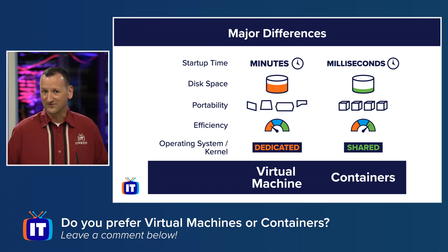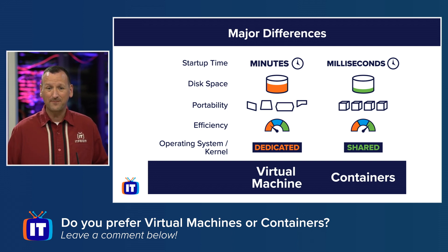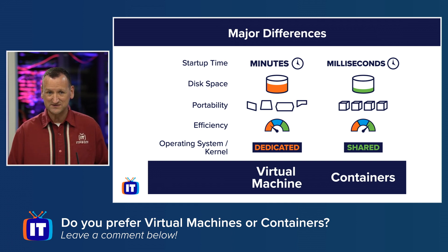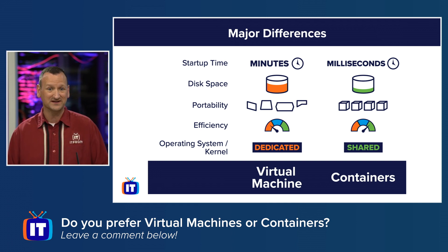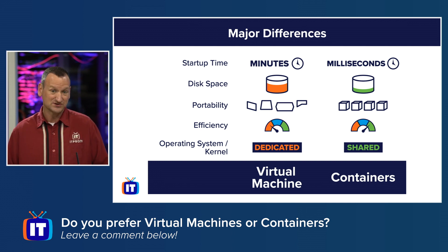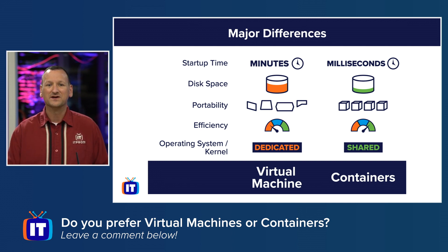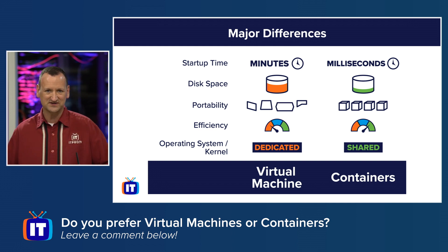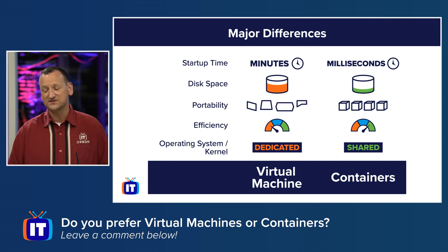We also talk about disk space. When you have an entire copy of an operating system running in a virtual machine, that's going to consume disk space. And the more VMs you have, the more duplicate data you have for those operating systems, and that consumes extra storage. Containers share — they use a container image and fire up with just their applications. They're far more efficient as far as the storage they consume.